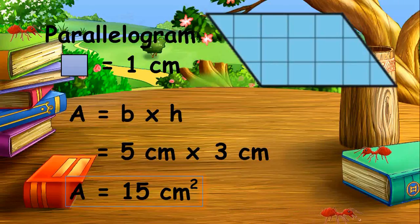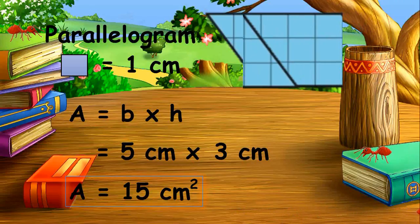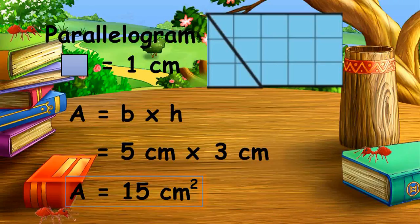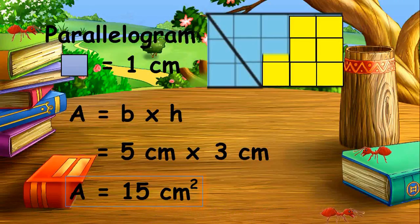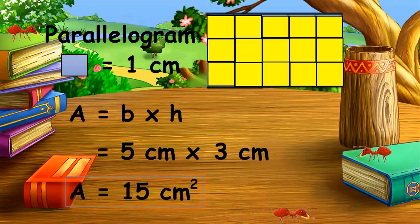Let us check if our answer is correct by counting the square units of the parallelogram. To count properly, let's make the parallelogram a rectangle by moving the small right triangle from its right to its left. It has now become a rectangle. Counting the square units: 1, 2, 3, 4, 5, 6, 7, 8, 9, 10, 11, 12, 13, 14, and 15. Our answer is correct — there are 15 square centimeters enclosed by the parallelogram.